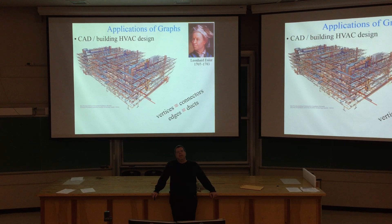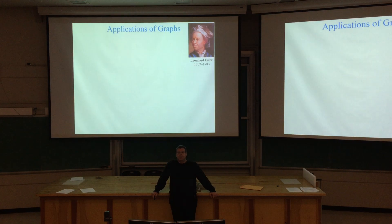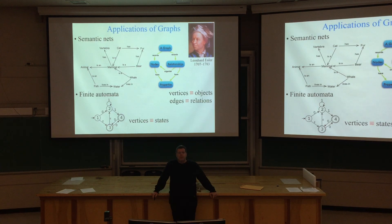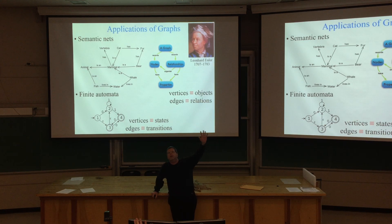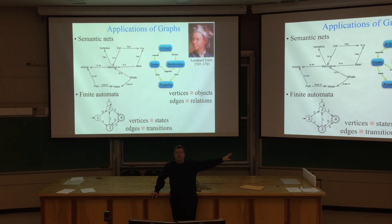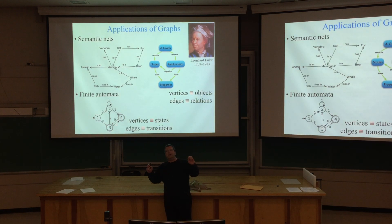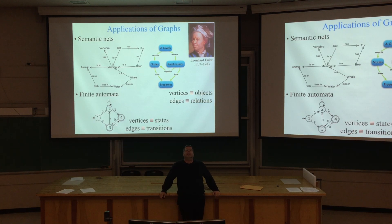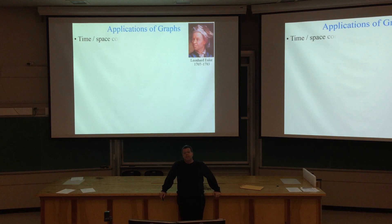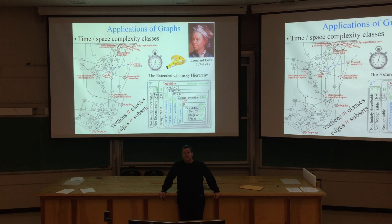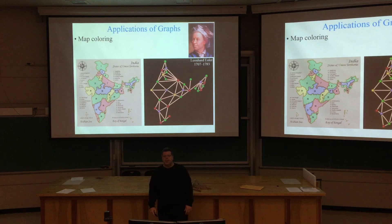This shows the ubiquity of graphs — they're literally everywhere. In computer-aided design: vertices are connectors, edges are ducts. Semantic nets and finite automata: vertices are states, edges are transitions — we'll go into all this in much greater detail in theory class. Time complexity classes like the Chomsky hierarchy: vertices are classes, edges are subsumption relations. Map coloring: vertices are countries, edges are neighboring countries. Erdős numbers and Kevin Bacon numbers: vertices are people, edges are co-author or co-starring relations. The Oracle of Bacon was actually invented here at UVA about 20 years ago in the 90s.